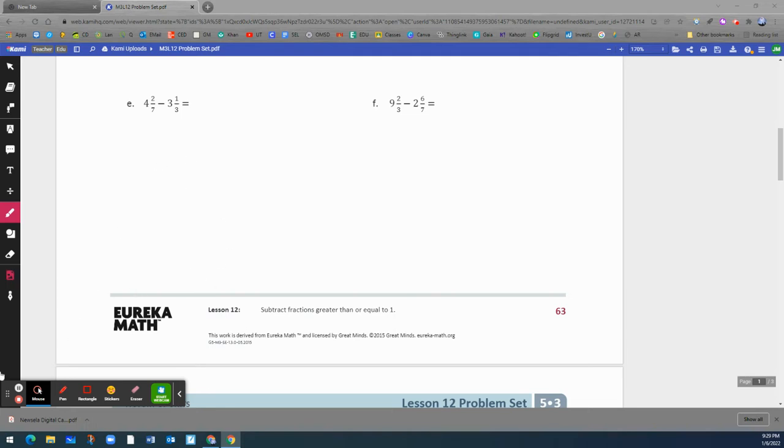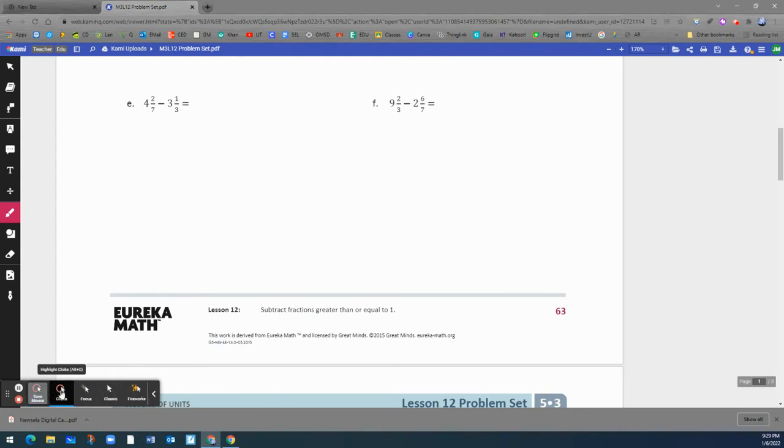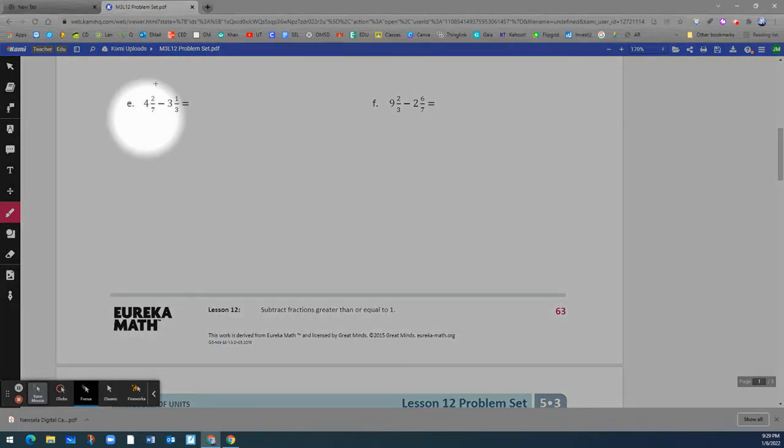Remember, a mixed number is a number that has a whole number and a fraction. For example, this one right here, the whole number is 4 and the fraction is 2 sevenths. That makes it a mixed number.